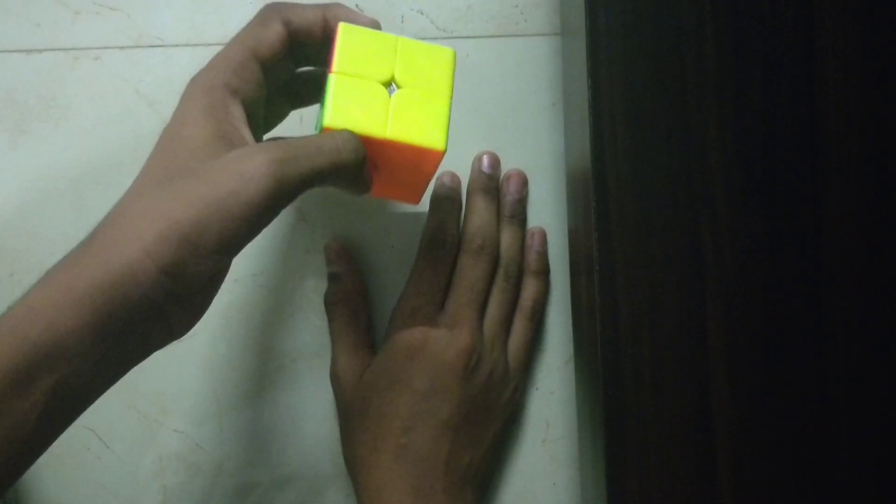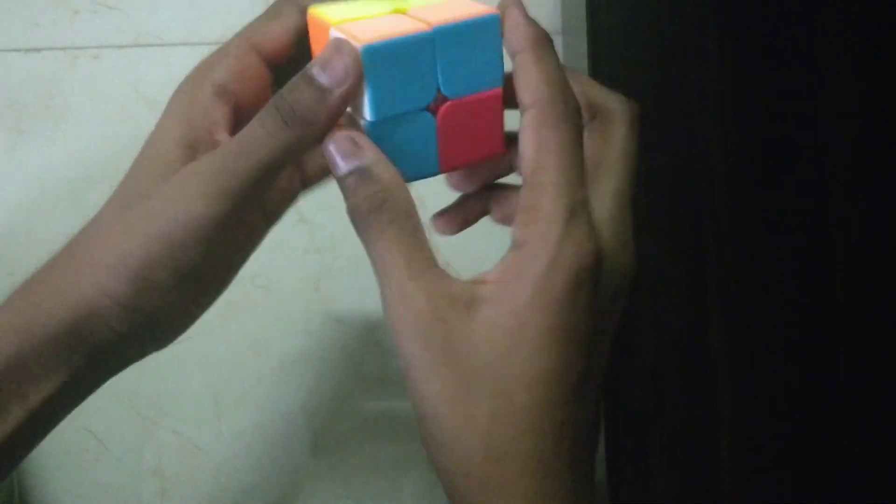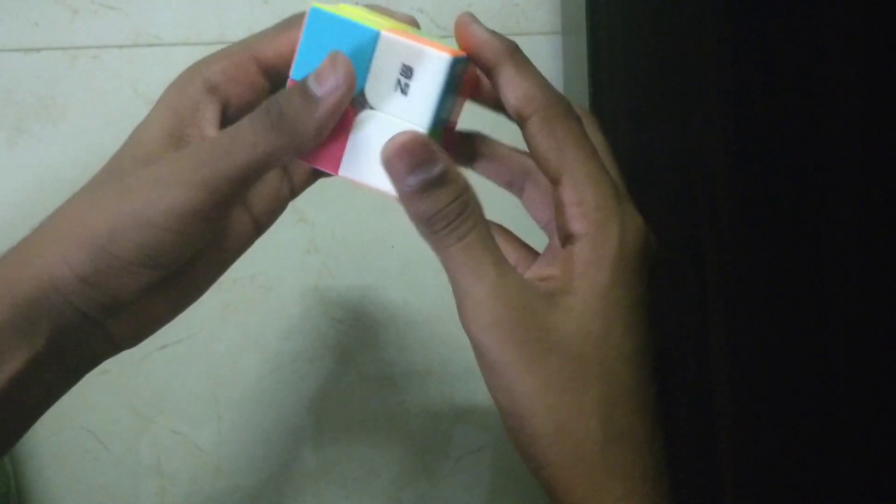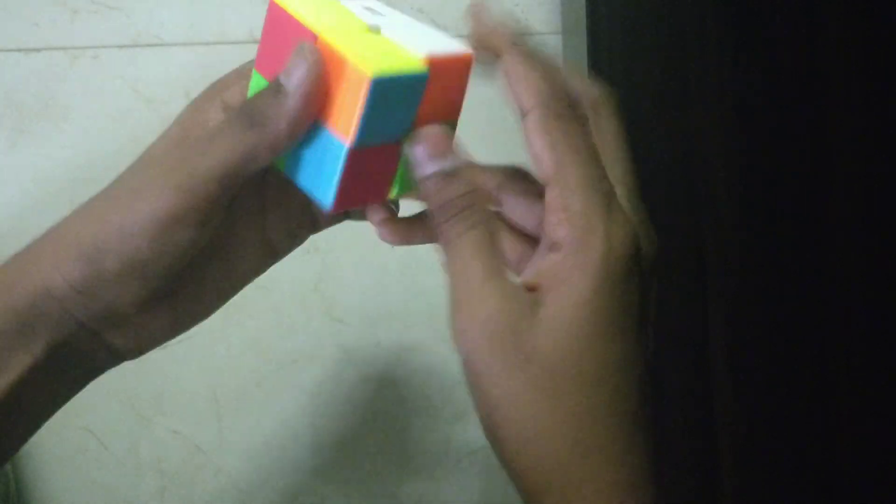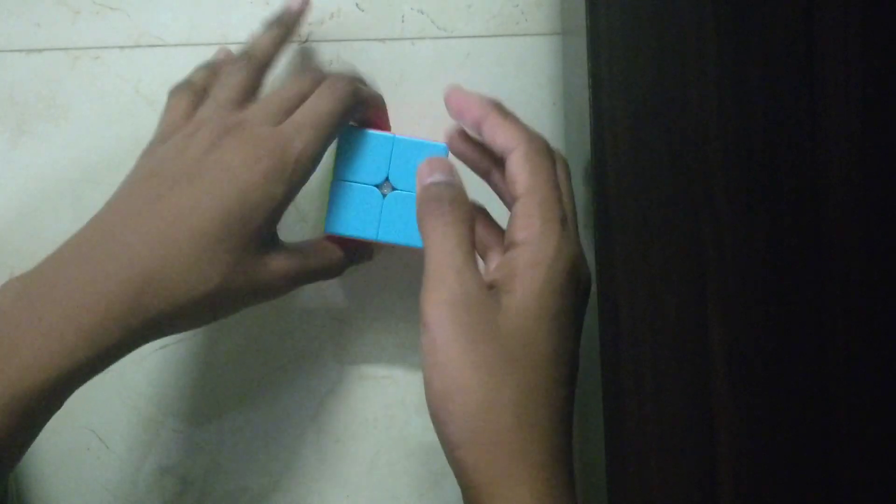So now here comes the new formula. So the new formula is you do this: down, up, one, two, and down, top, top, one, two, top, top. And you have finished the Rubik's cube.